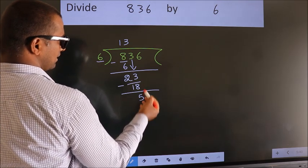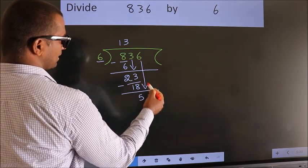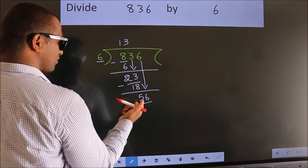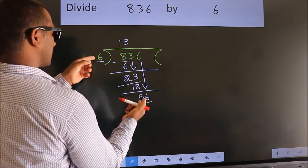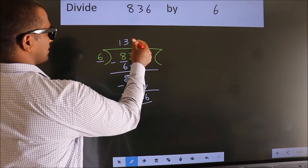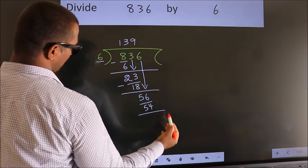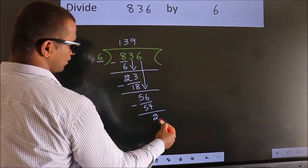After this, bring down the beside number. So 6 down. So 56. A number close to 56 in the 6 table is 6 nines 54. Now we subtract. We get 2.